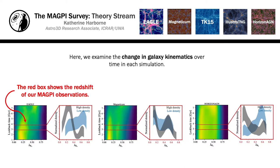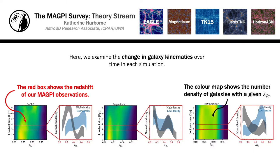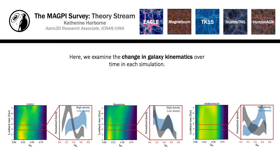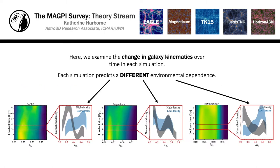The purpose of the Theory Stream of Magpie is to investigate these differences between our models in detail, to understand the reasons for these differences, and to compare and update our subgrid physics to reflect the Magpie galaxies that we observe.